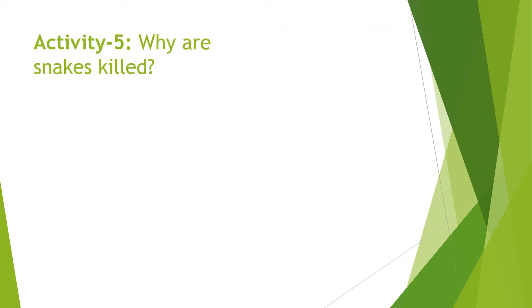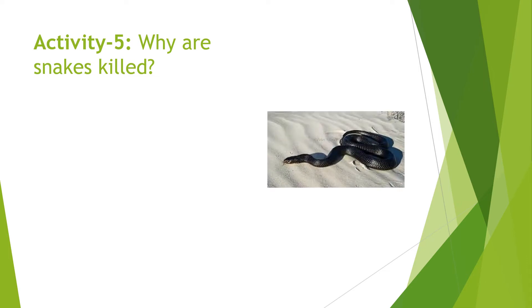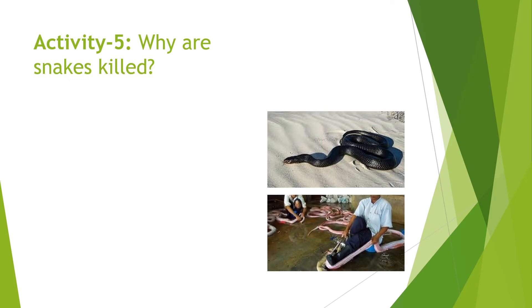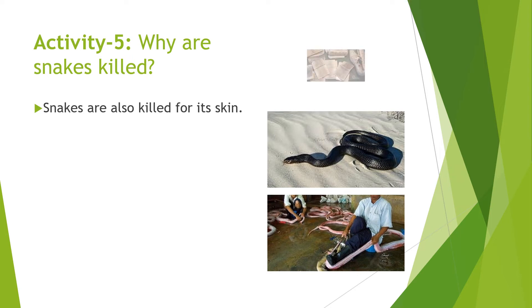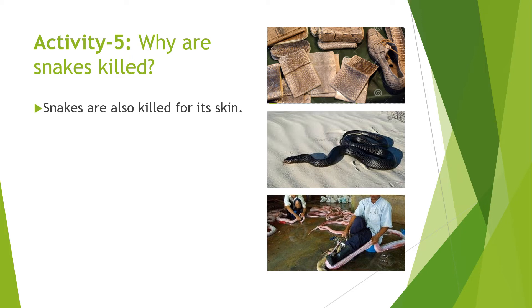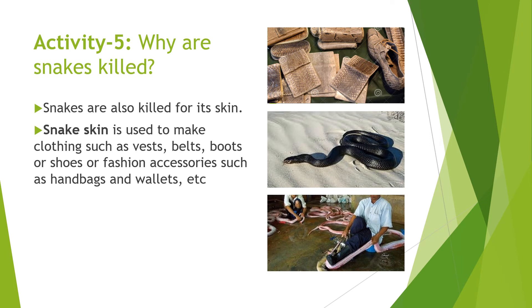Now let us do the fifth activity, where we observe the pictures and answer: why are snakes killed? This is the picture of a snake. It looks very dangerous, but their skins have been taken away by humans. Snakes are also killed for their skin. Snake skin is used to make clothing such as hats, belts, boots or shoes, or fashion accessories such as handbags and wallets. So snakes are also killed for their skin.